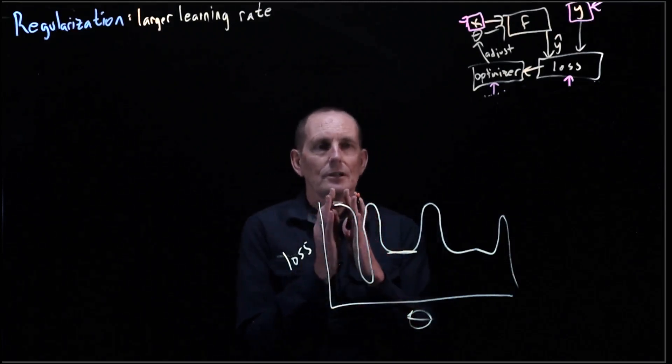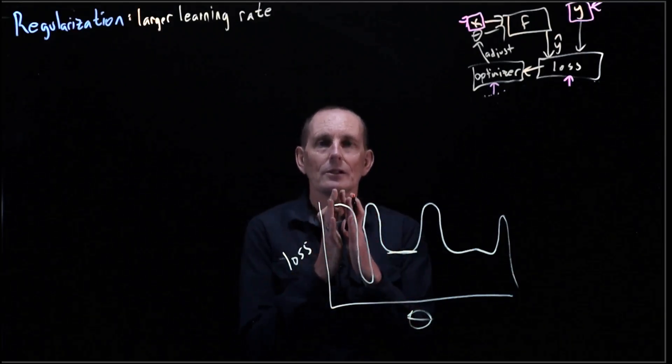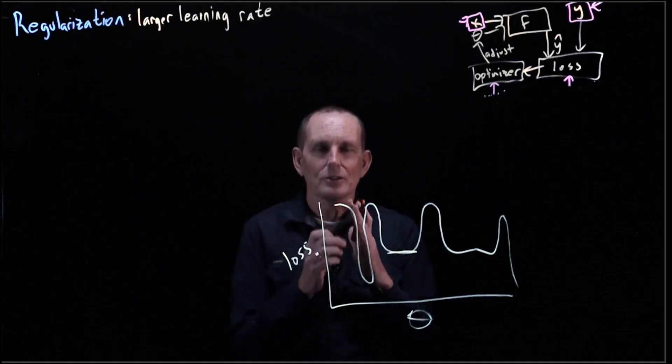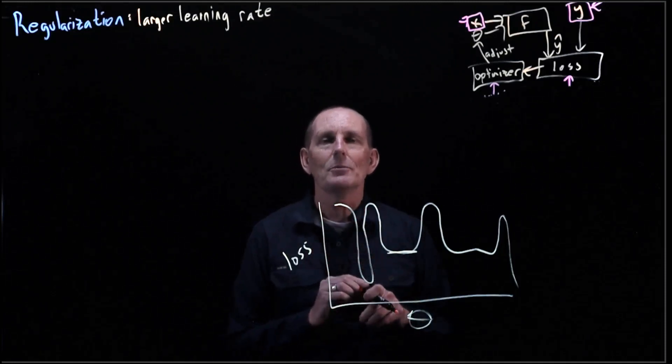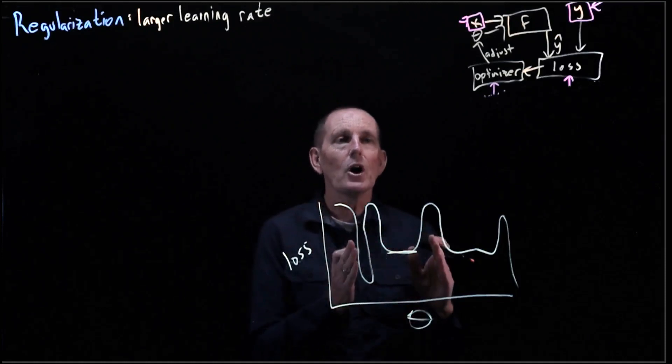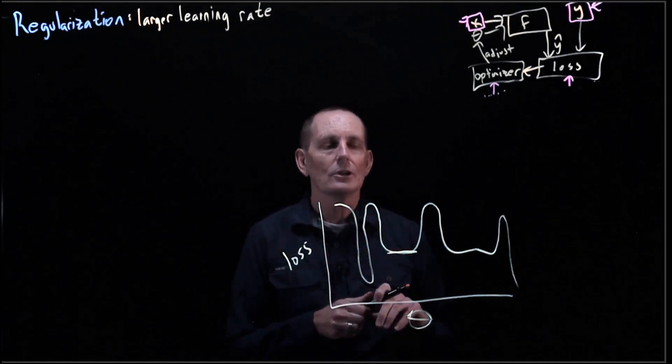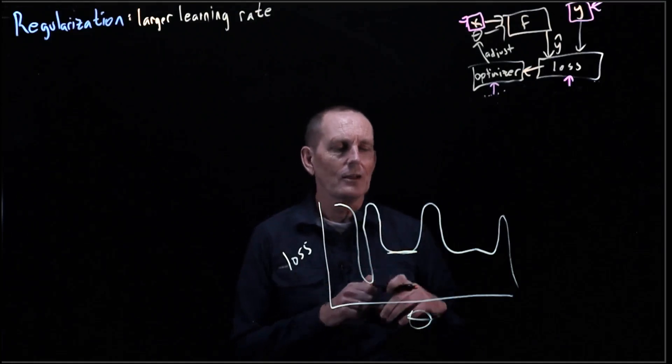Very narrow areas may tend not to generalize well because it's very specific on those particular thetas and it may be very dependent on the x's. Whereas if we had a broad area, it can be more generalized. So larger learning rates can lead to that.